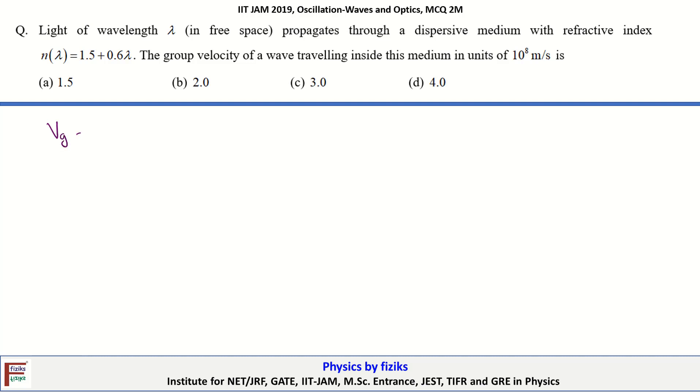The group velocity is defined as dω/dk. In terms of refractive index n, this can be written as c upon n minus lambda dn by d lambda.